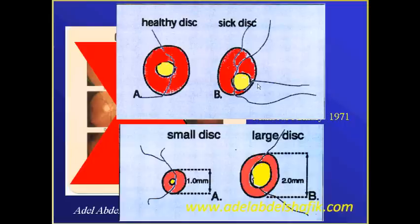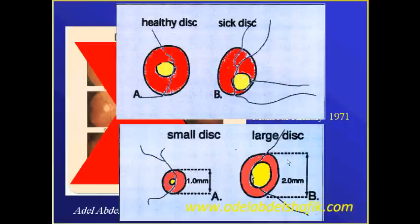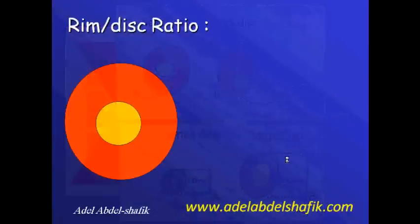We may have a large disc where a normal large disc gets a large cup, and a small disc gets a small or no cup. So you may find a cup disc ratio of 0.3 in a small disc and this could be pathological, while a ratio of 0.6 in a large disc can be physiological. The cup disc ratio does not take into consideration the size of the disc, so it is better not to use it.